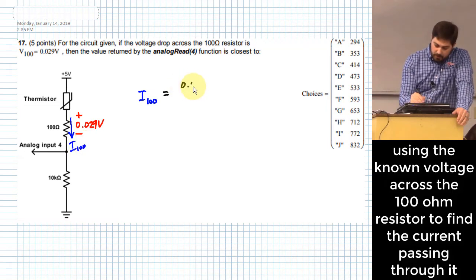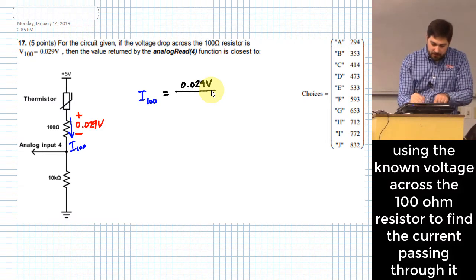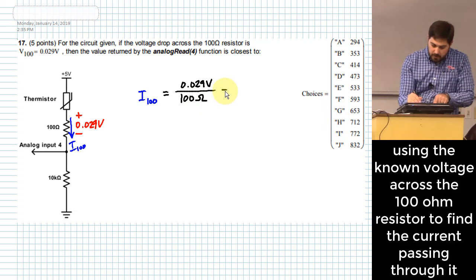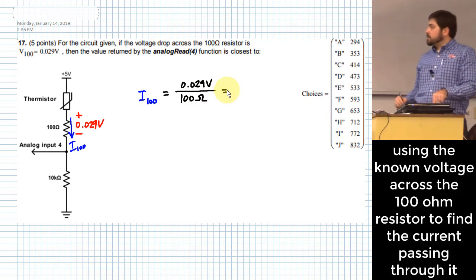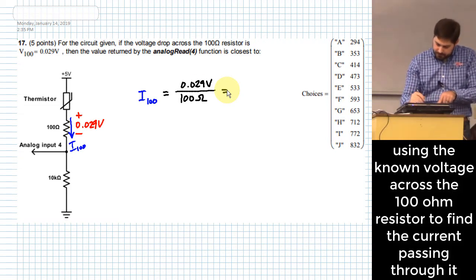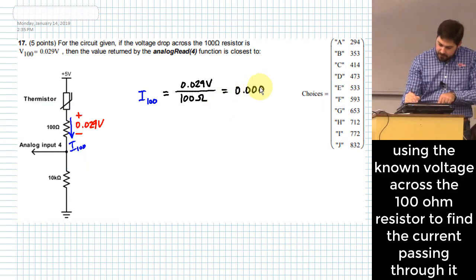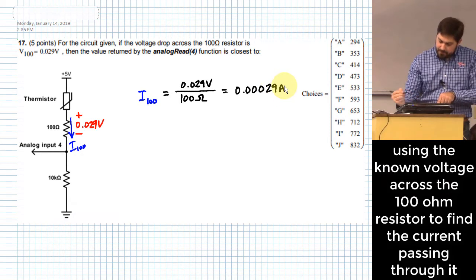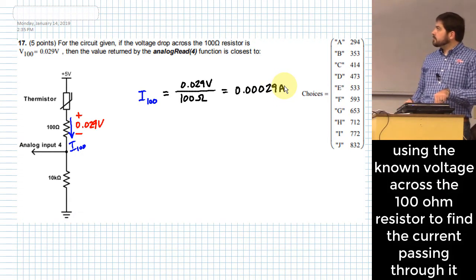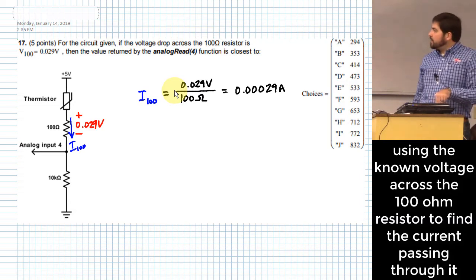So you take 0.029 volts and divide it by the resistance of 100 ohms. What does that give us for a current? Someone says 0.00029 amps. How do you know that? You can just think about moving the decimal place two places because it's divided by 100. Well, how does that help us?